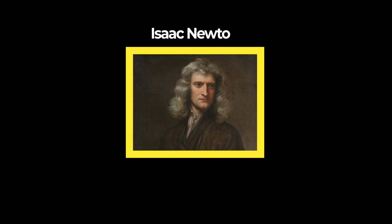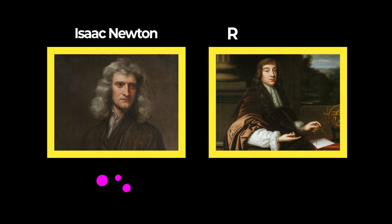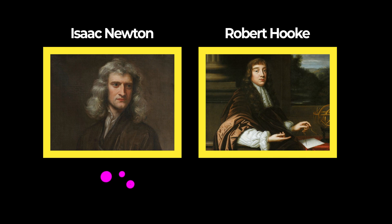In the 17th century, Isaac Newton decided that light was made up of particles, while his rival, Robert Hooke, thought of light as a wave. Both of them based their theories on observations of light's behaviors: reflection and refraction.